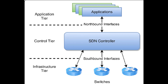Lastly, we have the infrastructure layer. Actual physical switches and devices themselves reside at the infrastructure layer. All these layers communicate using respective northbound and southbound APIs. Applications talk to the controller through its northbound interface, and the controller and switches communicate using the southbound interfaces.